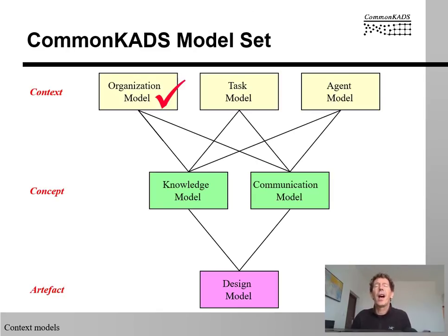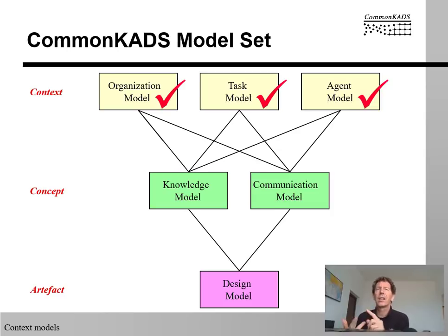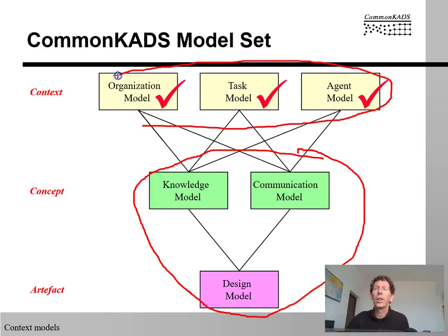This concludes our journey. We have now done five worksheets for the organization model, two worksheets for the task model, and one worksheet for the agent model. We really understand the world in which we are going to operate — we understand what the problems are, what the opportunities are, and some of these opportunities could be that we are going to build a knowledge-based system, but not necessarily. We have identified the business case, the technical case, the project case, and we understand the tasks to be done and the agents involved. We are now in a position to make a decision on what system we are going to build and how. That will be the topic of future lectures on the other sets of models, which are more concerned with building the system right, whereas until now we were mostly concerned with whether we are building the right system.